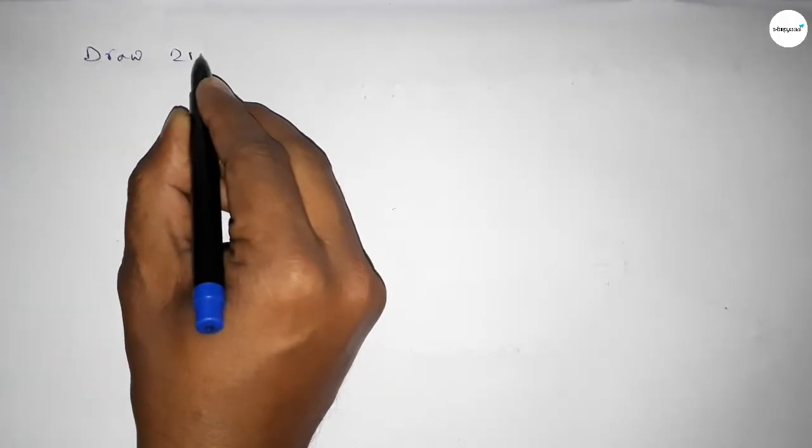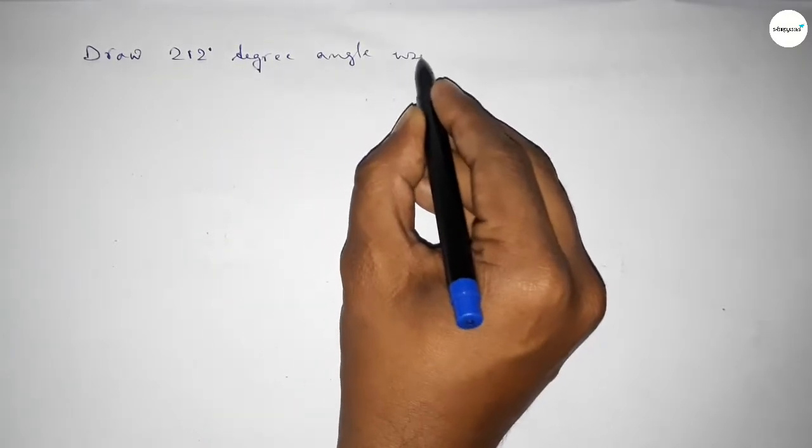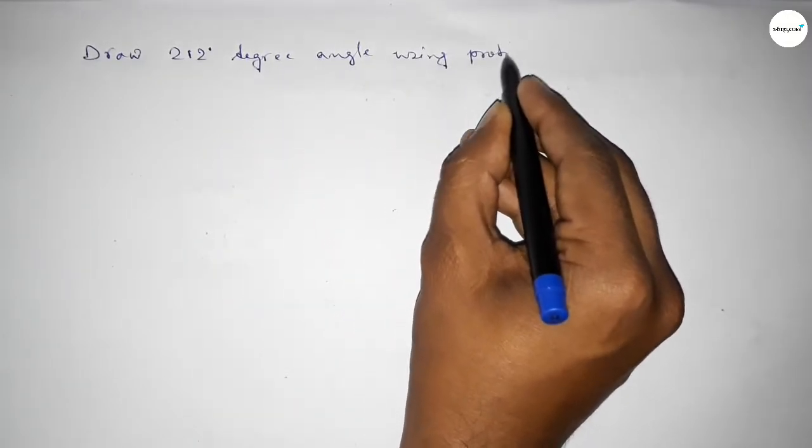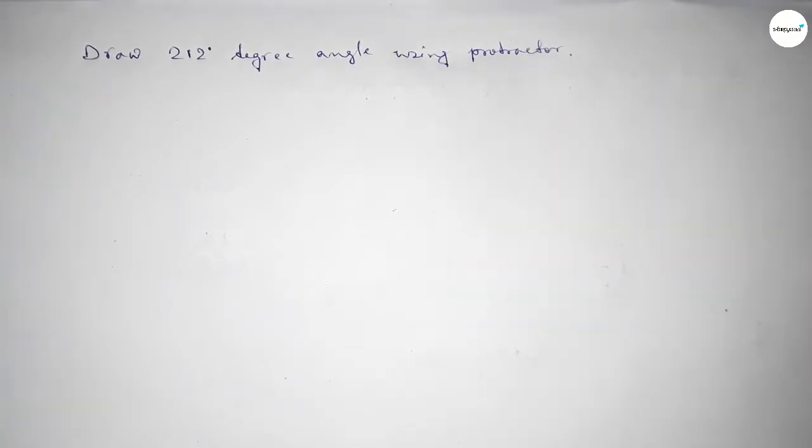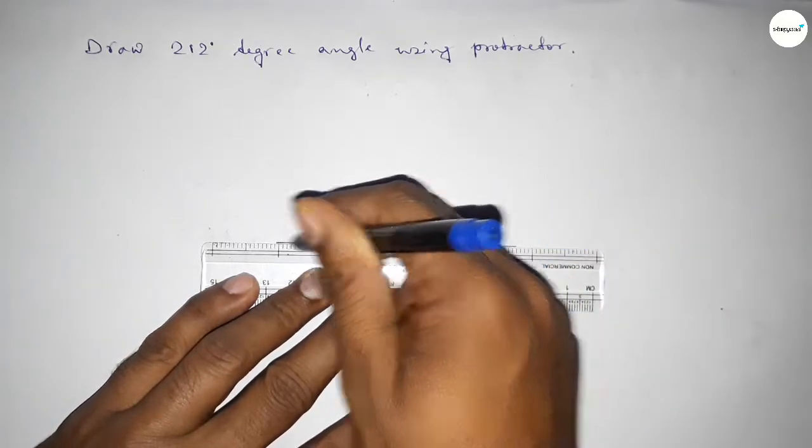Hi everyone, welcome to Size Chair Classes. Today in this video we have to draw a 212 degree angle by using a protractor. So let's start the video. First of all, we have to draw here a straight line of any length.